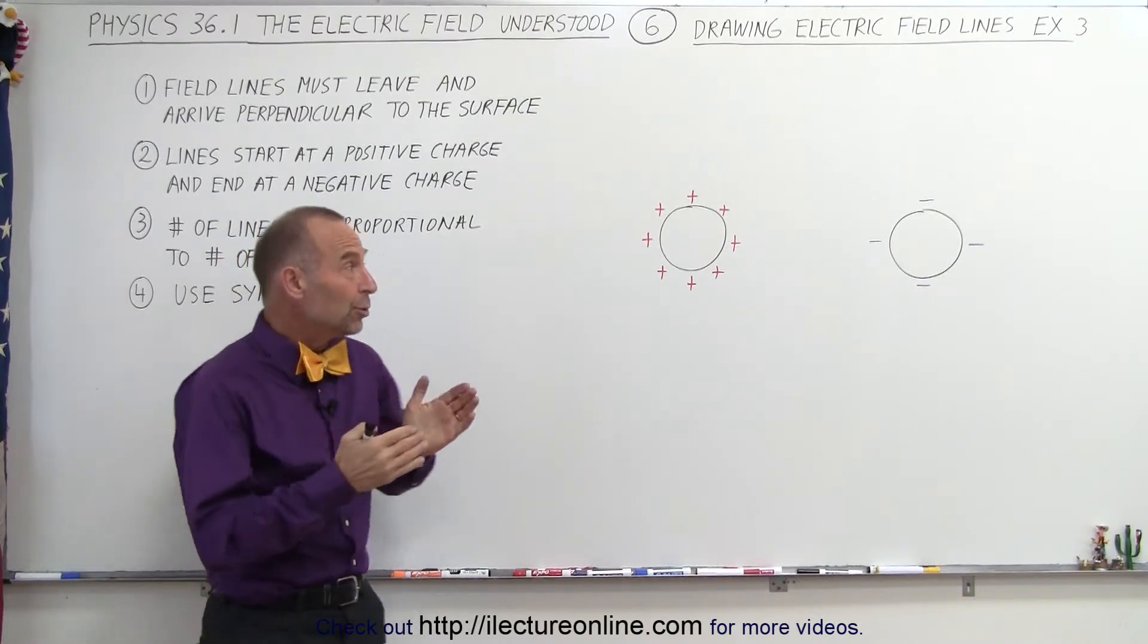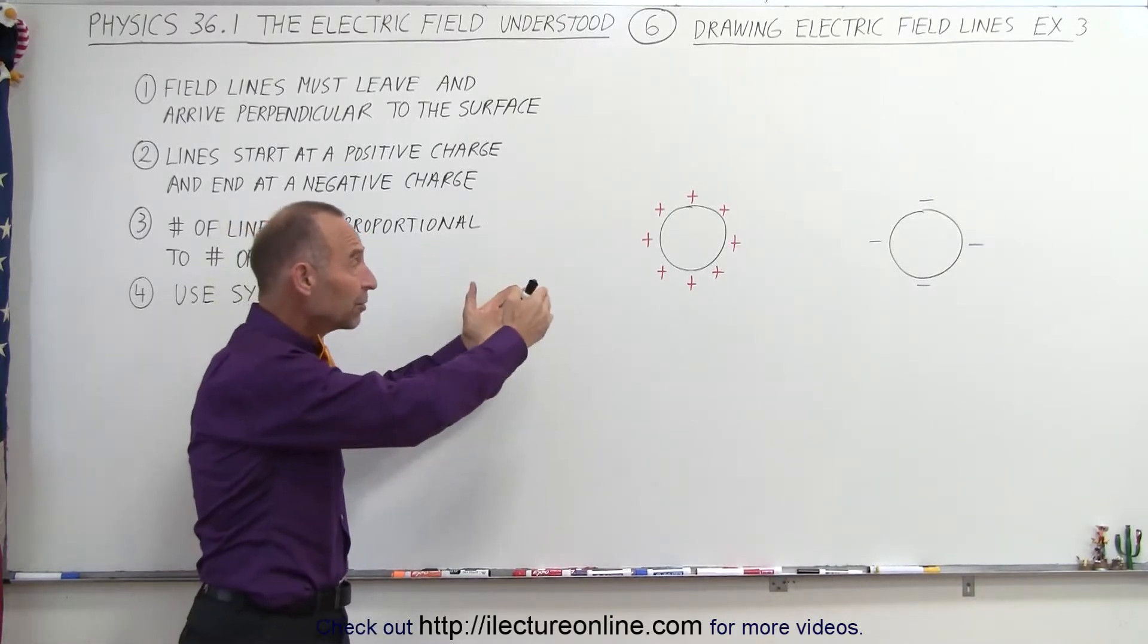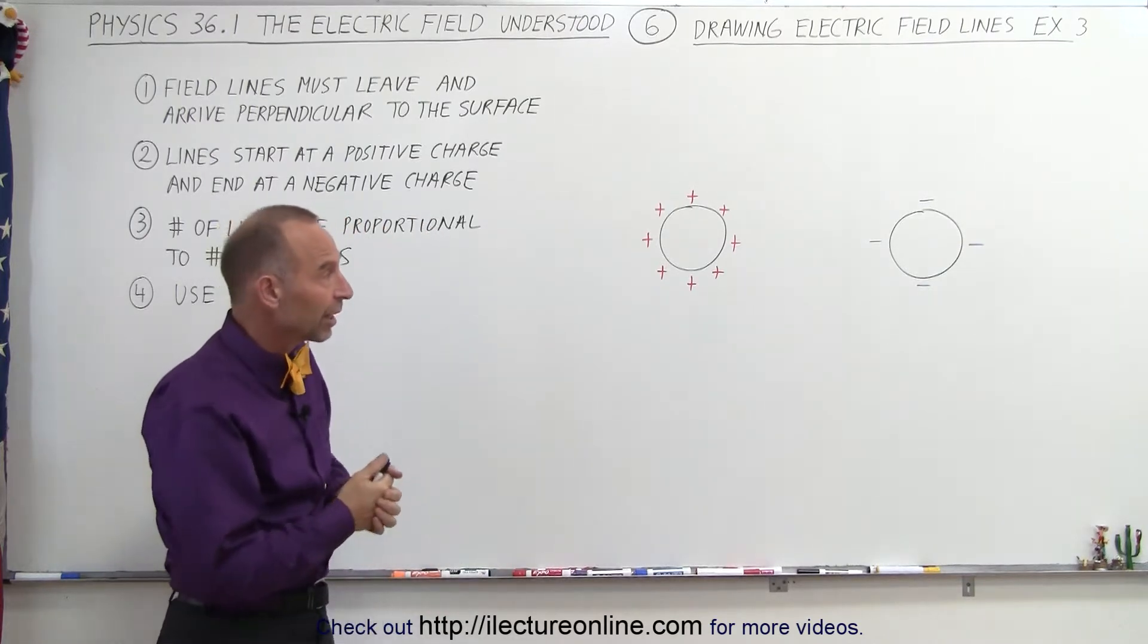Welcome to Electron Line. So what do we do when we have more positive charges than negative charges? How do we draw the field lines now?